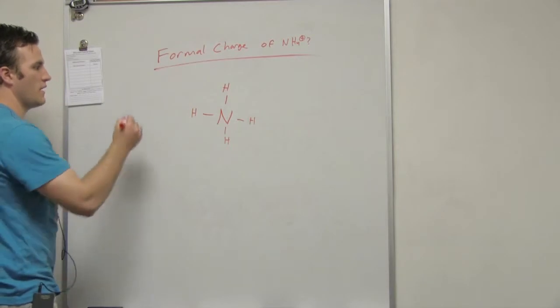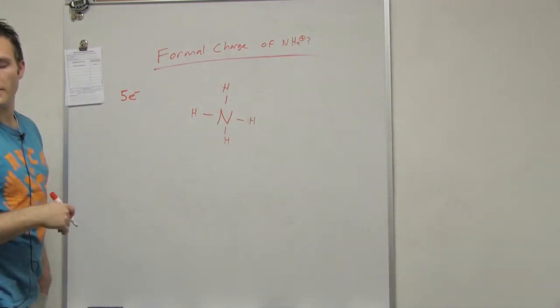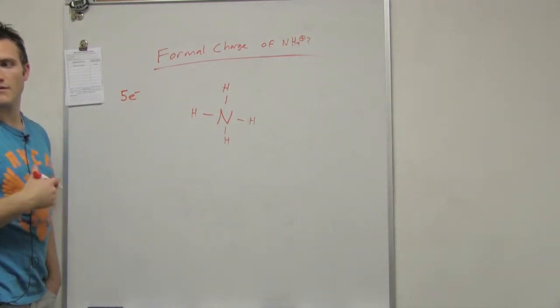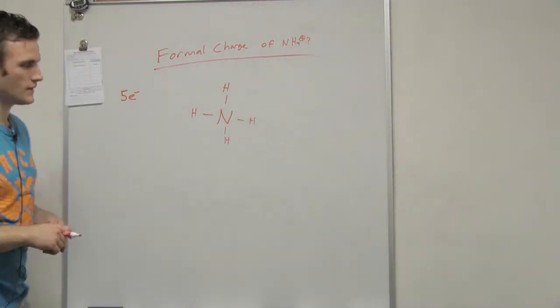So then, I always ask myself, how many valence electrons did nitrogen bring to the table? It brought five. One, two, three, four, five. Yeah, five.